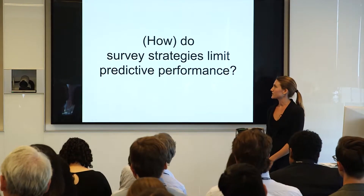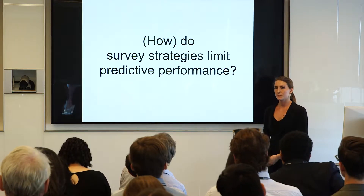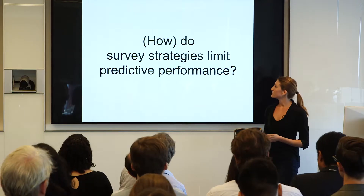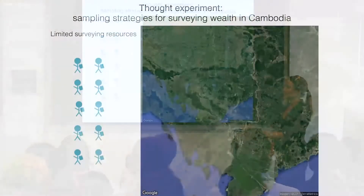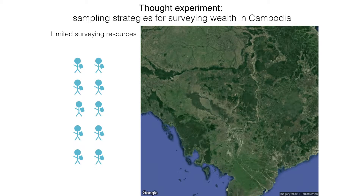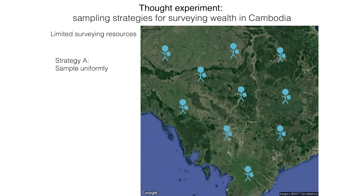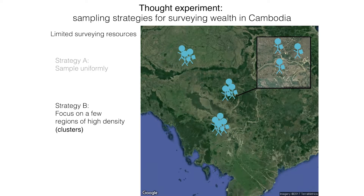Our work focuses on how survey strategies limit predictive performance, specifically when pairing data sets with remote sensing data. As a thought experiment: imagine you're surveying for wealth in Cambodia with limited resources. Those limited resources represent time, money, and physical people. One way to implement your survey is to sample uniformly from the population in Cambodia. But think about what this means — you're traveling on dirt roads, getting a translator who speaks a specific Khmer dialect. All of this is really expensive. To leverage resources effectively, another approach is to focus on a few high-density regions and cluster your resources, focusing on cities where you can get many examples for less overhead cost.